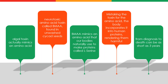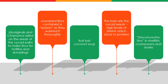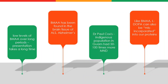People have low-level exposure to BMAA over a long period — it can take between 10 and 15 years before the condition appears, but from diagnosis to death it can be as little as three years. Bats ate these cycad seeds and bioconcentrate BMAA in the food chain. BMAA has been found in the brain tissue of ALS and Alzheimer's patients, and Dr. Paul Cox reported that populations in Guam had 50 to 100 times more incidences of MND.